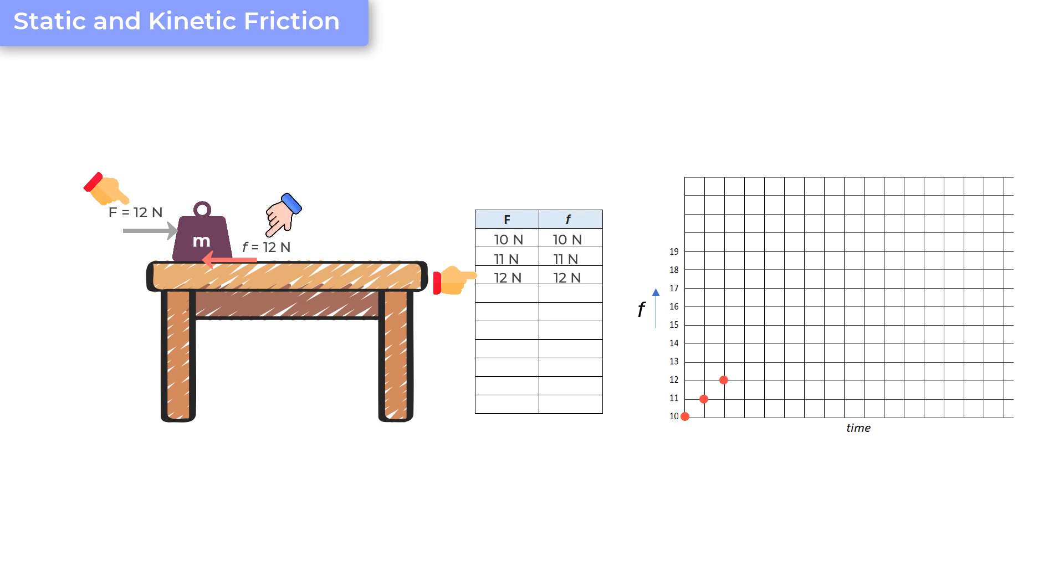And if you keep increasing the force, the force of friction would also increase in the same magnitude. But then, there would be a time when the box would just about start moving. So, let us say the force required to just about move the box is 18 N. Or, in other words, 18 N is a force where any decimal increase in the force would make the block move.